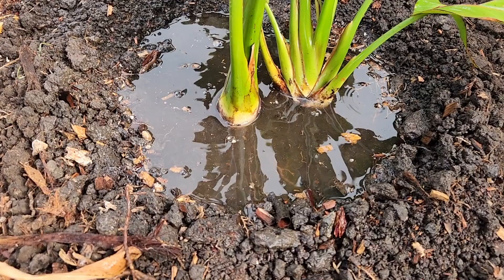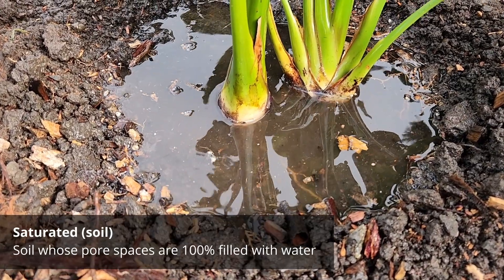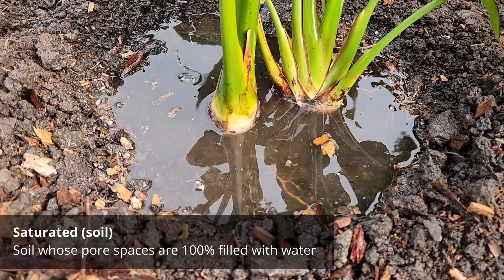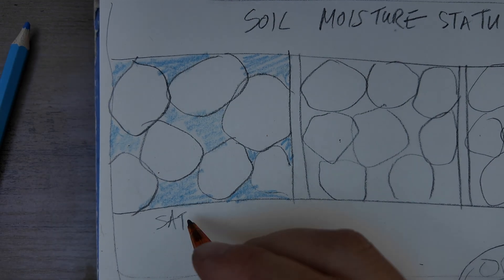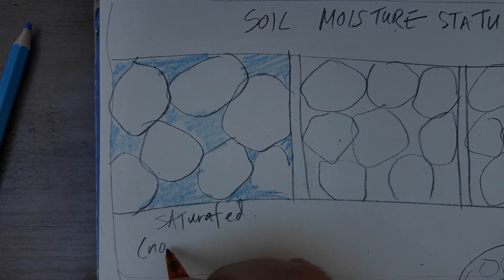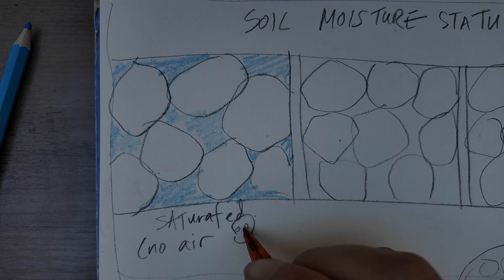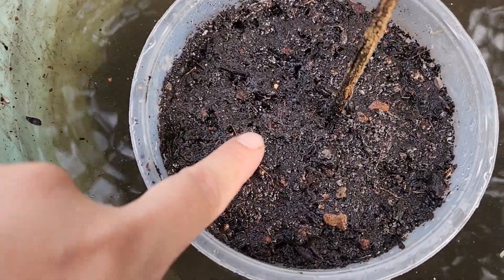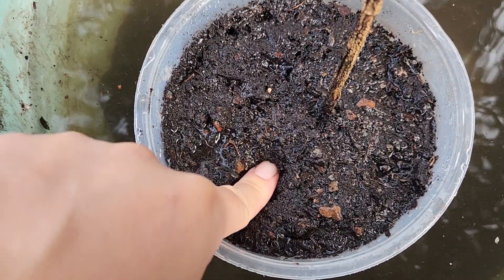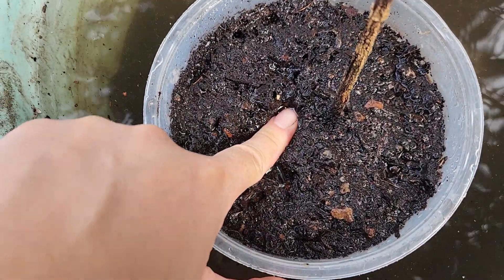Right after a rain or a heavy irrigation, if all those pores are filled with water, the soil is described as being saturated. It's fine if the soil is saturated for a short amount of time. But if it lasts for an extended amount of time, plants will start to suffer because they need oxygen to their roots. And if the water is filling up the pores, the oxygen cannot enter.